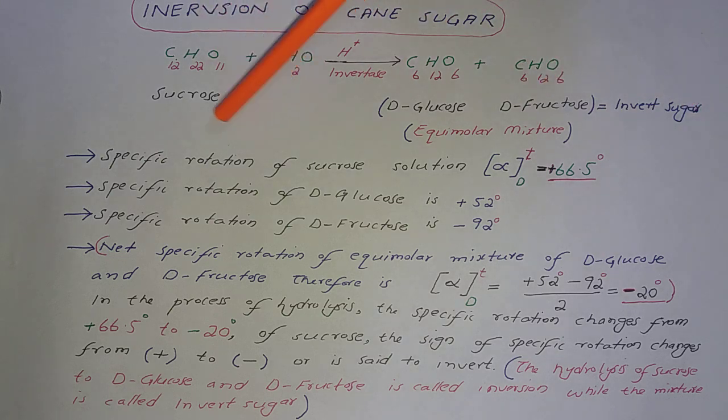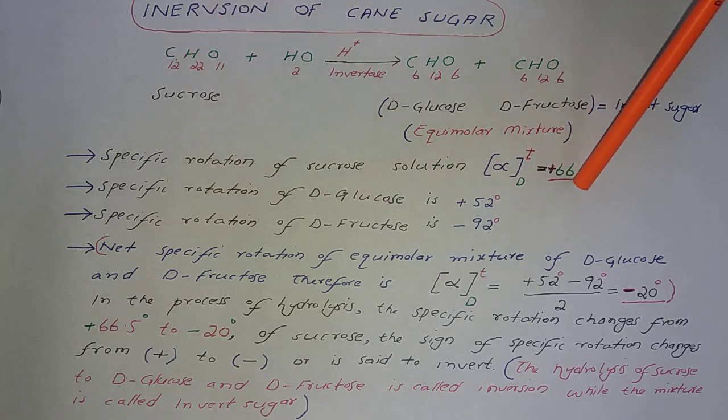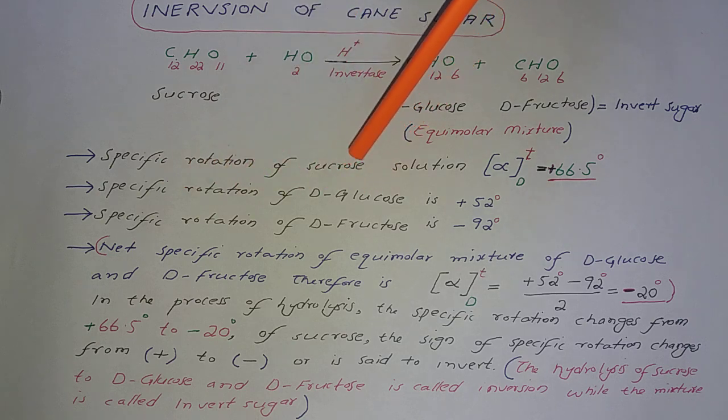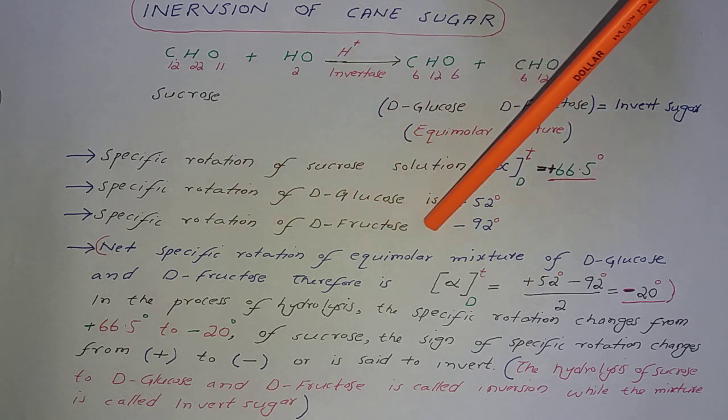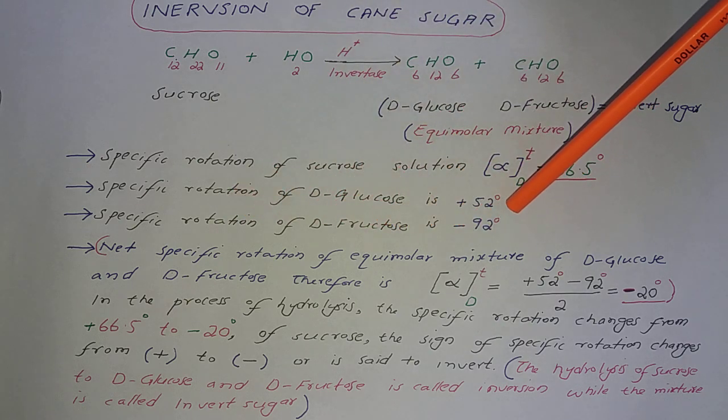The specific rotation of sacrose solution is plus 66.5 degrees. The specific rotation of D-glucose individually is plus 52 degrees. The specific rotation of D-fructose is minus 92 degrees.